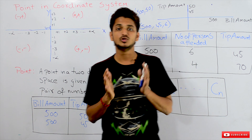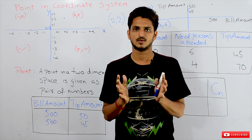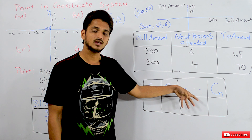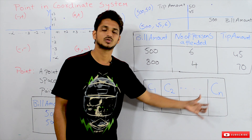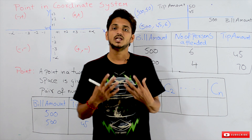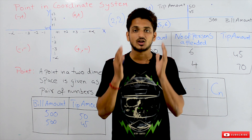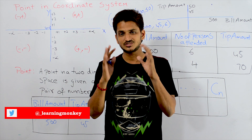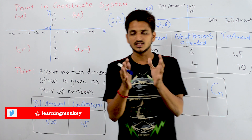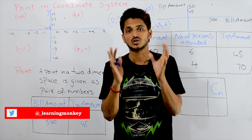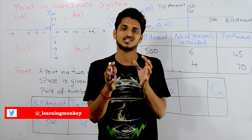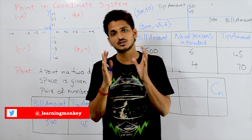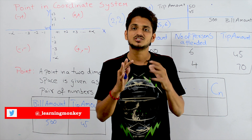As humans, we can visualize only up to three-dimensional coordinate space. If we have N columns, we need an N-dimensional coordinate space, which we cannot visualize. Take 15 to 20 minutes to imagine how an N-dimensional coordinate space looks like — this imagination will help you a lot in understanding the mathematics required for machine learning, since 99.9% of machine learning algorithms use N-dimensional coordinate space.